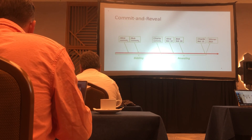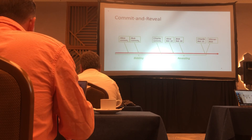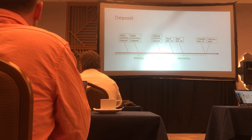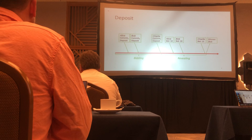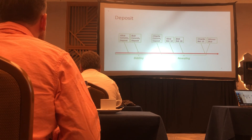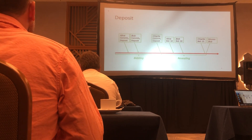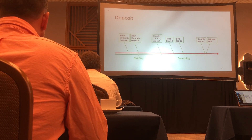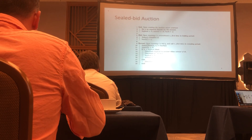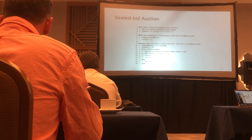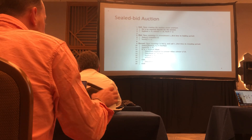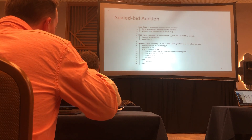However, this approach has an issue: how can we ensure that the winner actually pays what they bid? That's why we require a deposit. We ask participants to deposit money in the smart contract during the bidding period, and then after revealing, the winner pays using their deposit. The smart contract for this sealed bid auction is a bit longer — double the length of before. You can see there are two phases: a bidding phase and a revealing phase.